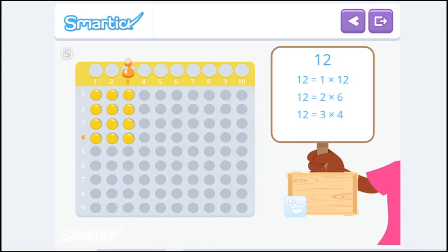Finding factors is like decomposing a number, or breaking it into two parts. 12 is equal to multiplying 3 by 4.